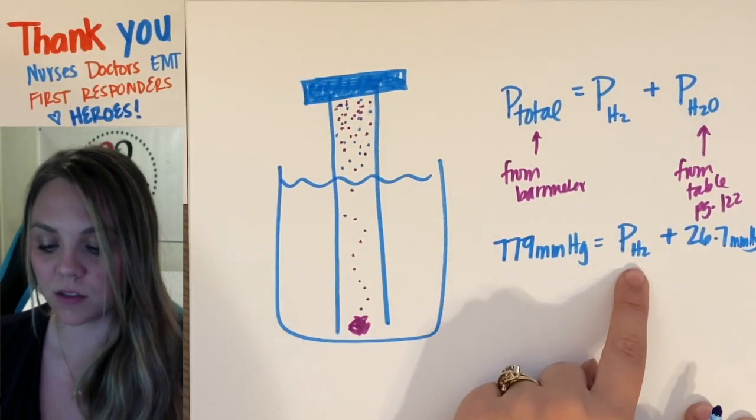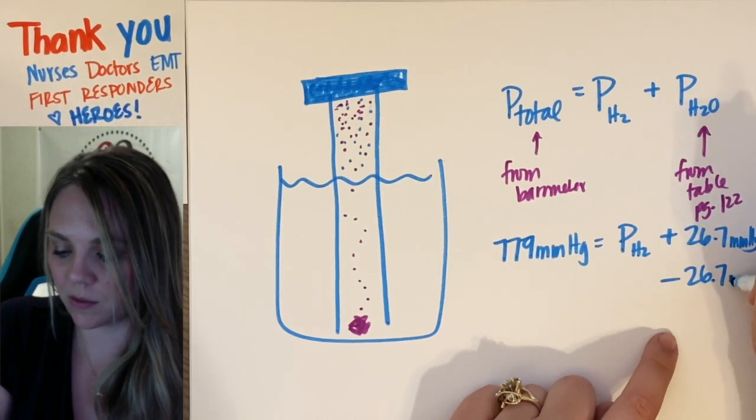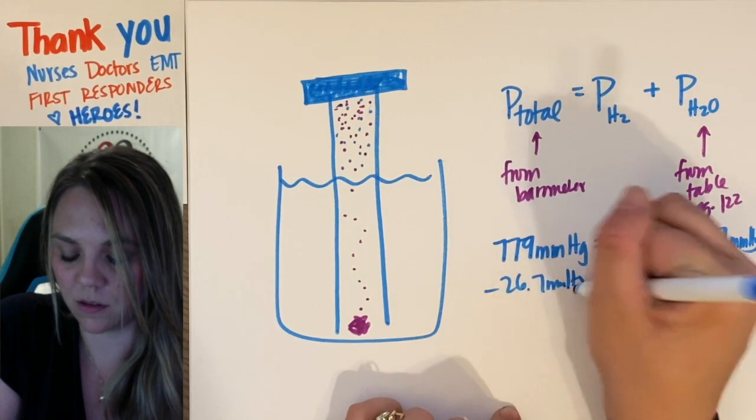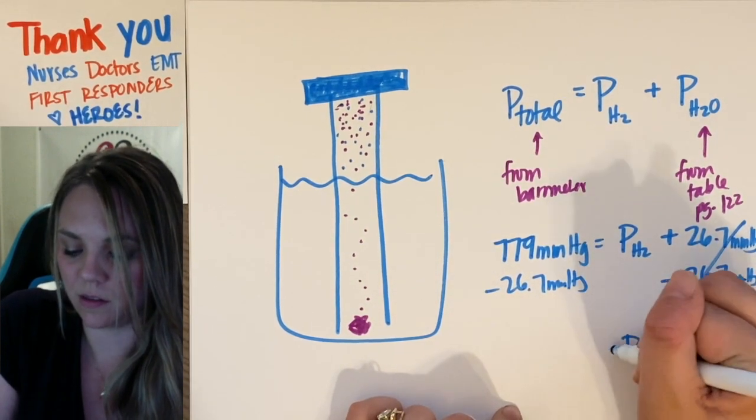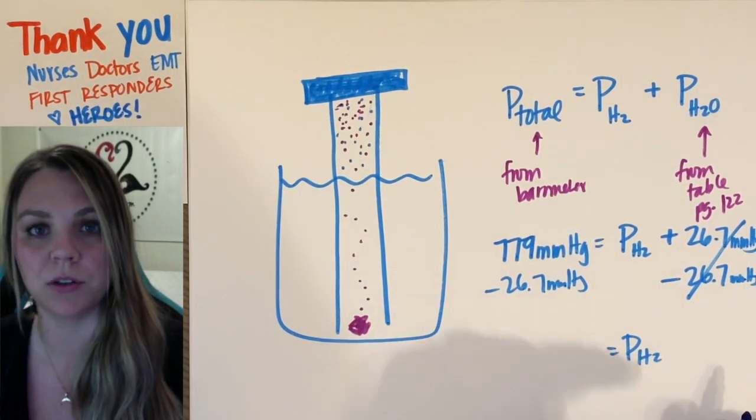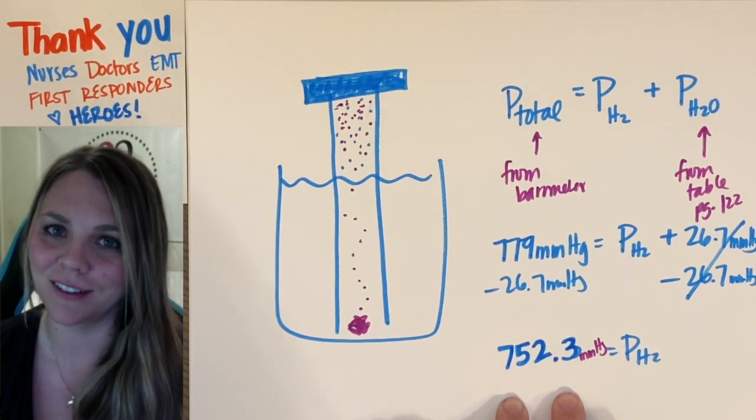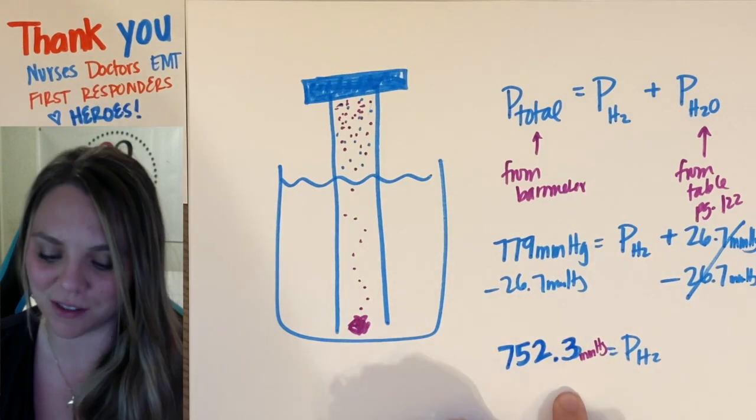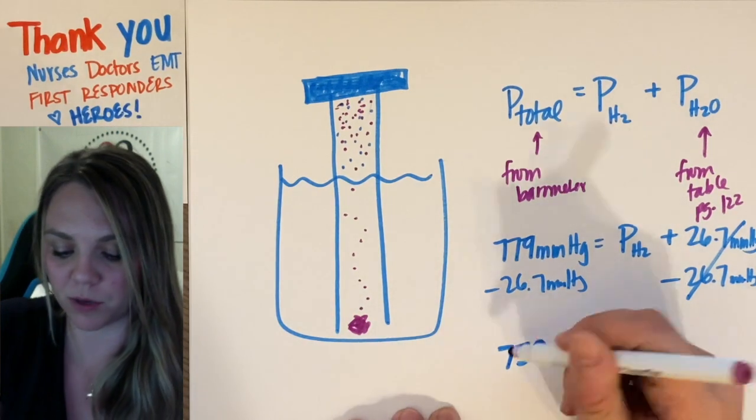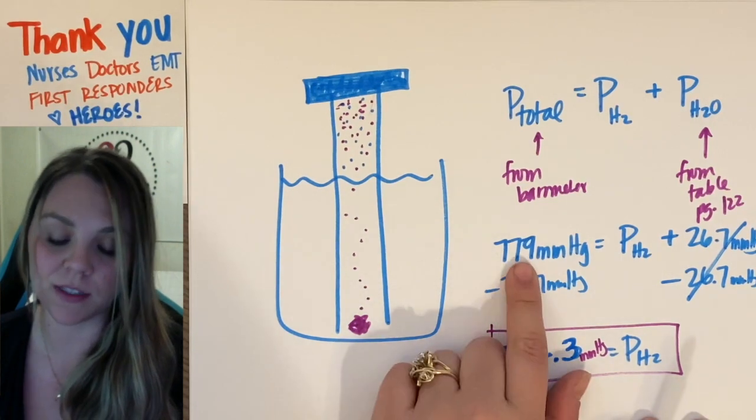We're running out of space. So now to solve for the pressure of your hydrogen, you just subtract 26.7 from both sides, and you will get the partial pressure of the hydrogen. So you're solving for the actual pressure of the hydrogen gas you created. Assuming I did math in my head correctly, which is never reliable, so double-check your calculator. But you just subtract, and you should get your partial pressure for hydrogen. 752.3 instead of 779.